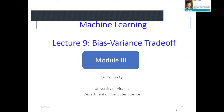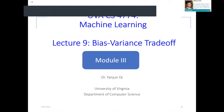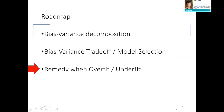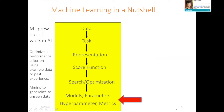Today is the last module of bias and variance trade-off. We'll talk about bias-variance decomposition, remedies for overfitting and underfitting, and how to detect them. This whole theoretical analysis belongs to model properties, hyperparameter tuning, and model selection.